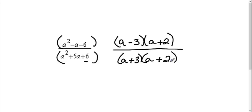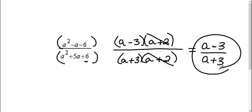Now that I've broken it down, I can cross off a plus 2, a plus 2 because they're the same. I can't cross these off because they're not the same. Therefore, I'm left with a minus 3 on the top and a plus 3 on the bottom as my final answer.